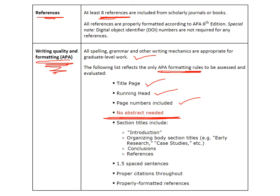You do need to include section titles: the introduction should be a section title, along with organizing body section titles appropriate for what you're reporting on. Include 'Conclusion' or 'Conclusions' as a section title, as well as 'References.' You also need to space your sentences at one and a half and include proper citations and properly formatted references throughout the paper. Links on the project page and the library and reference pages for the course provide help with APA formatting conventions.